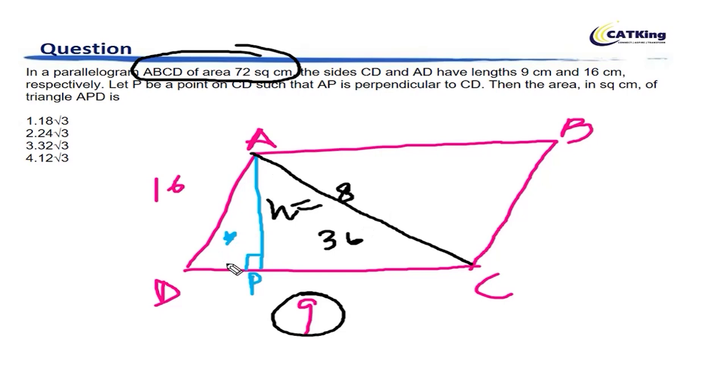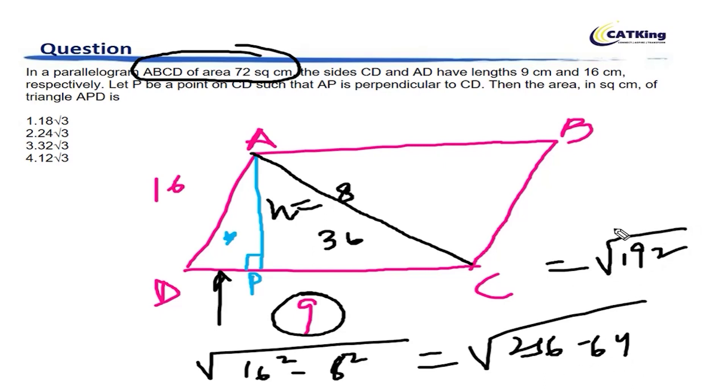Now, to find the area of the triangle APD, we will find out the base quickly by Pythagoras theorem. So, DP will be root of 16 square minus 8 square. 16 square is 256, 8 square is 64. So, this becomes 192. If we convert, 96 is 16 into 6 into 2. So, we can take out 2 and 4. This becomes 8 into root 3.